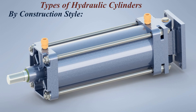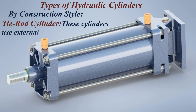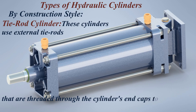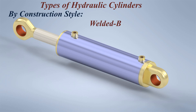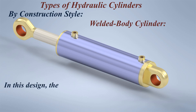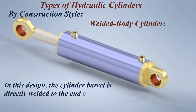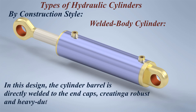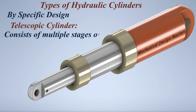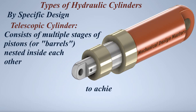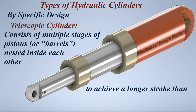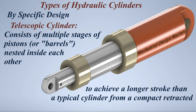By construction style: tie rod cylinder — these cylinders use external tie rods that are threaded through the cylinder's end caps to provide stability and hold the cylinder assembly together. Welded body cylinder — in this design, the cylinder barrel is directly welded to the end caps, creating a robust and heavy-duty barrel. By specific design: telescopic cylinder — consists of multiple stages of pistons or barrels nested inside each other to achieve a longer stroke than a typical cylinder from a compact, retracted length.